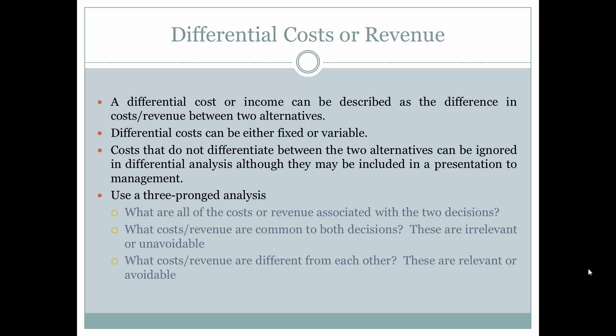What costs or revenues are different from one another? These are relevant or avoidable. If you make one decision, they can be avoided as opposed to making the other decision.